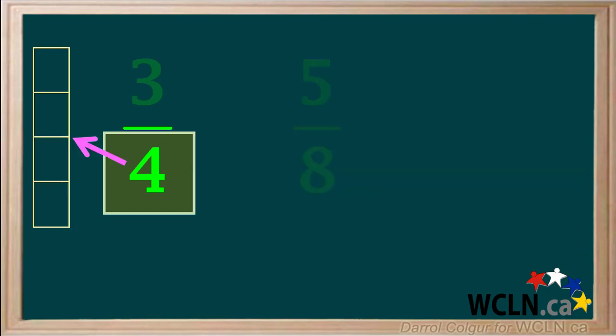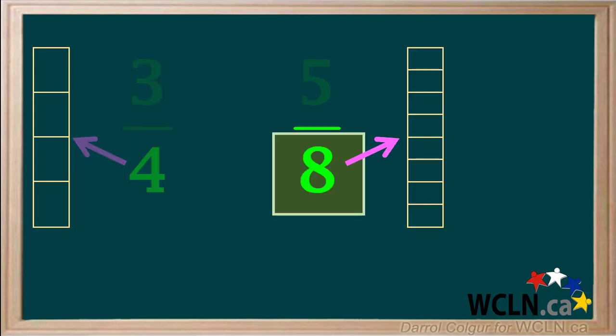In the fraction three-quarters, the denominator four tells us a whole object is divided into four parts. But in the fraction five-eighths, the eight tells us the whole object is divided into eight parts.